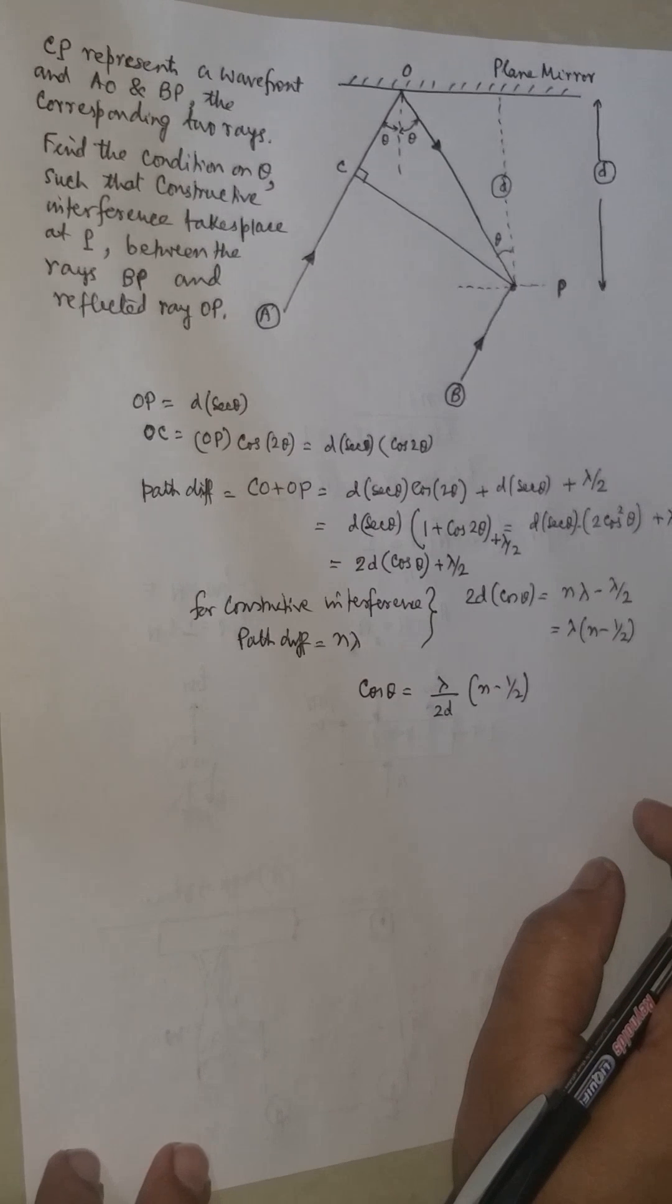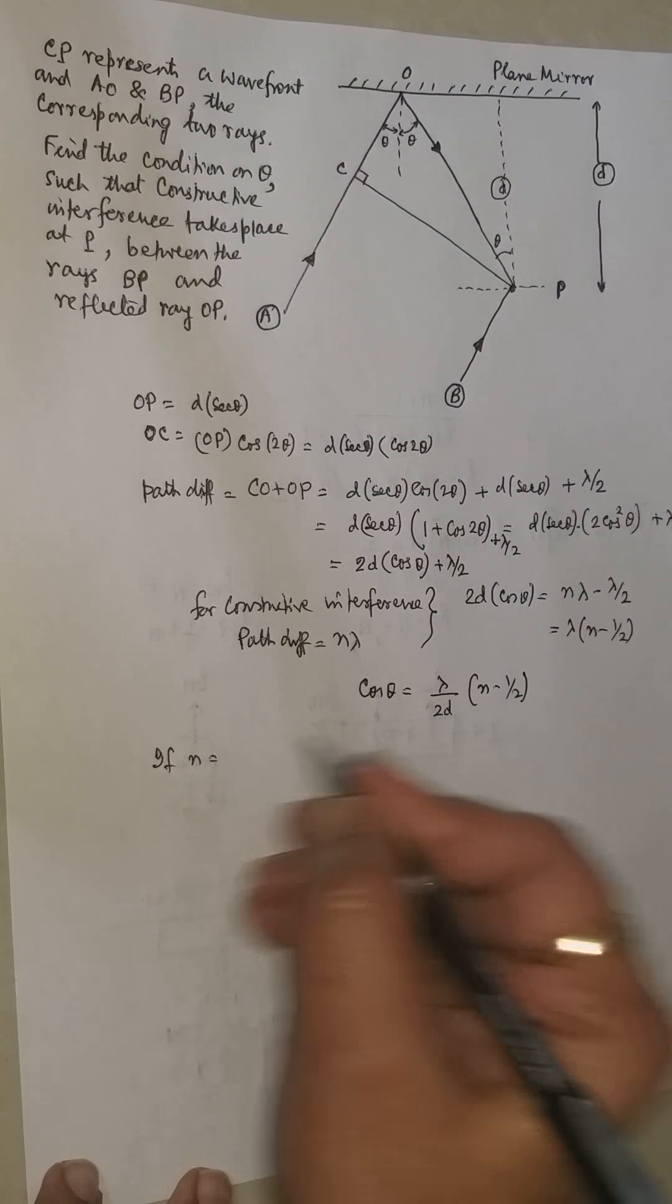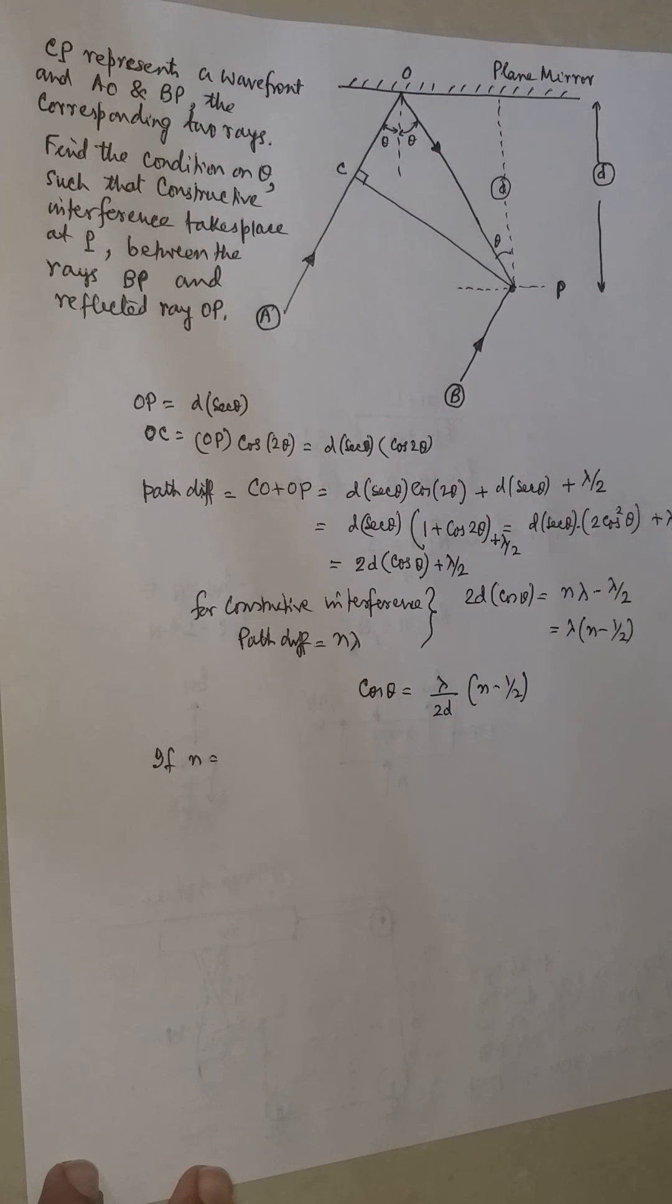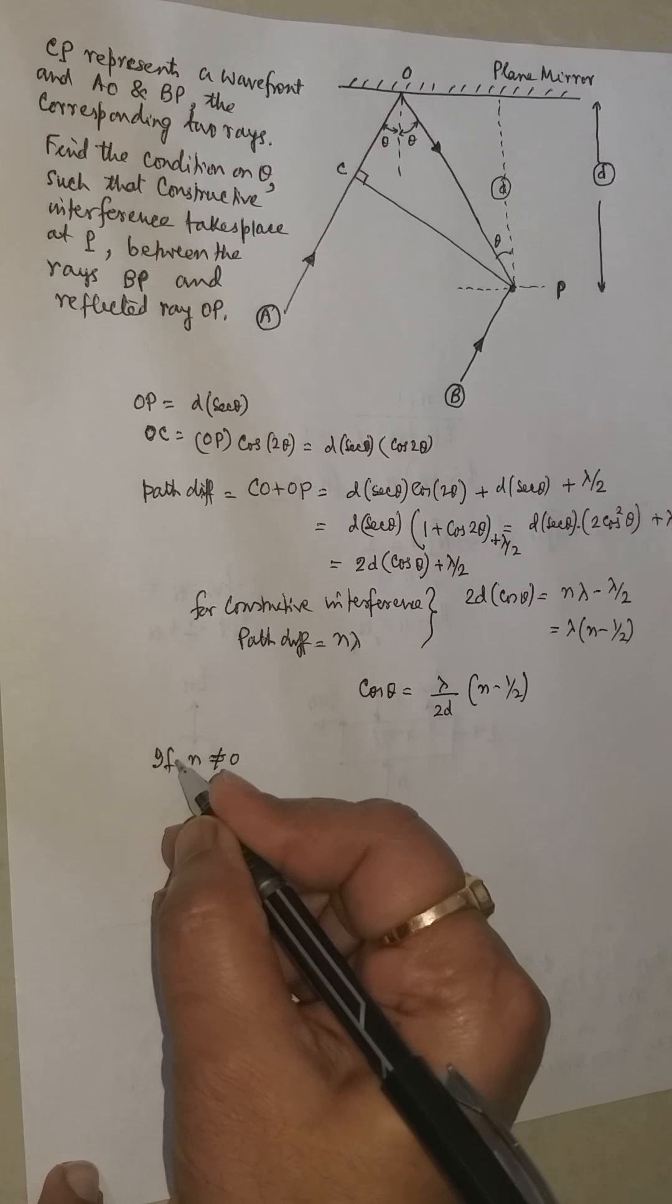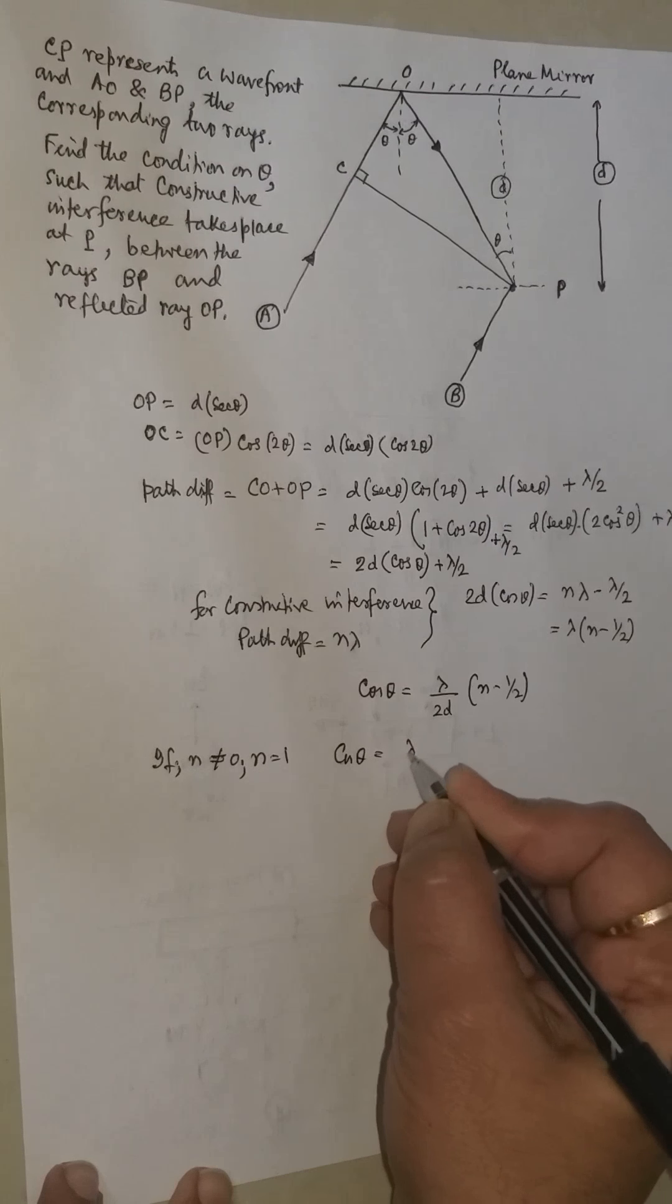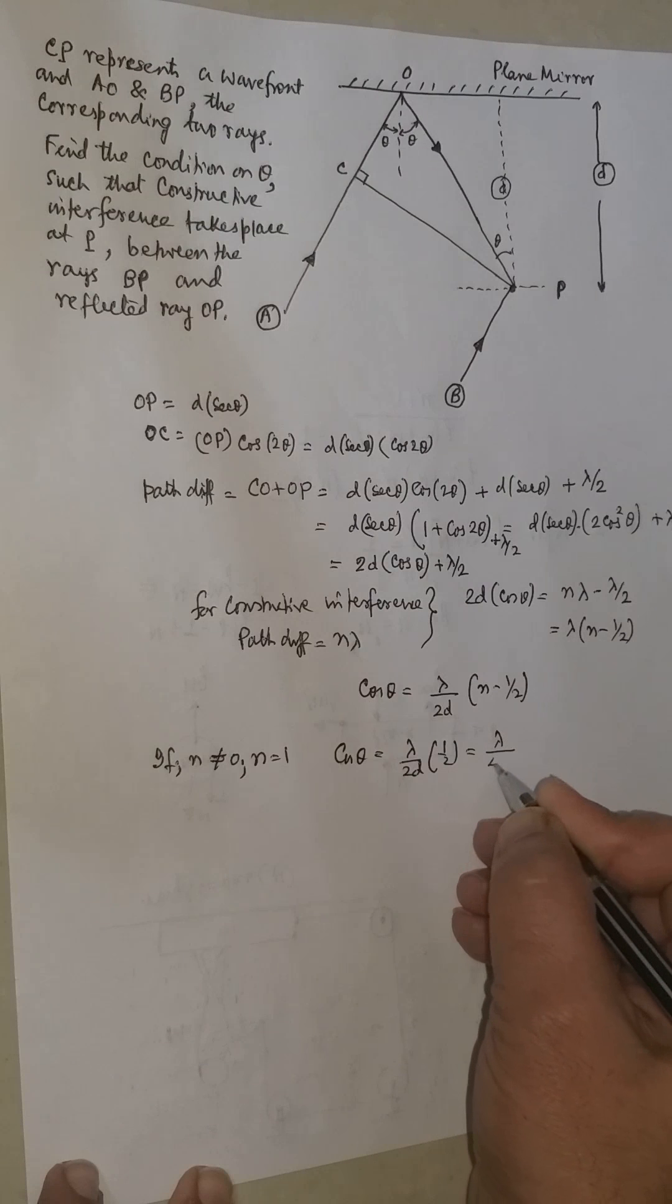Now if it is an objective question, you have to check for the value of N. If suppose, we cannot put N equal to 0 because it will become cos theta as negative. That is not admissible. So N cannot be 0. Then N is equal to 1. Then cos theta will be equal to lambda by 2D into half. That is lambda by 4D.